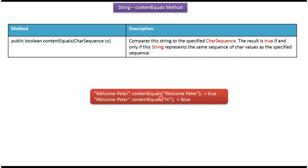Using the contentEquals method, I am comparing the string 'welcome Peter' with the character sequence 'welcome Peter'. Both are equal, so it returns true. Then I am comparing the string 'welcome Peter' with the character sequence 'hi'. Both are not equal, so it returns false.